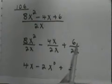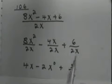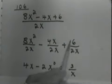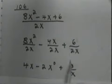And here I do not have an x on the top, so I just leave it on the bottom. I do reduce my fractions. 2 goes into 2, 1. 2 goes into 6, 3. So I'm left with 3 over x.